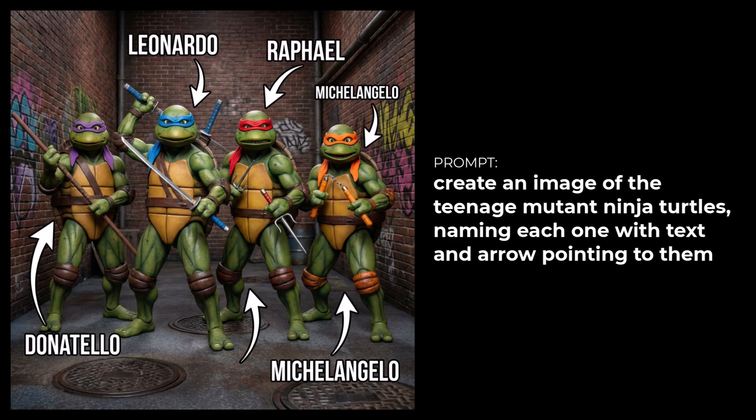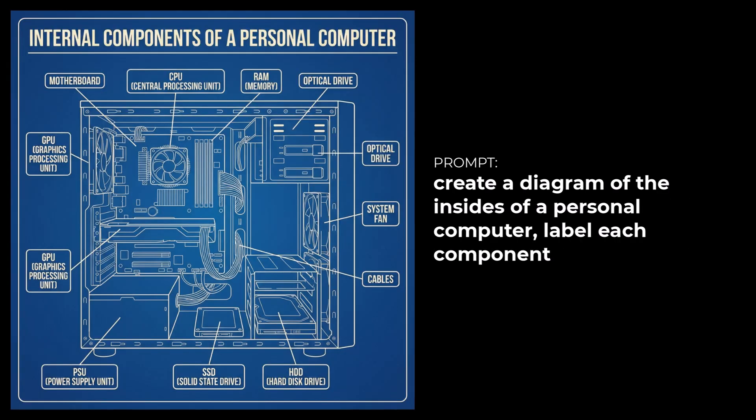I continued on and asked it to create an image of the Teenage Mutant Ninja Turtles, naming each one with text and an arrow pointing to it. It did that accurately, although it named Michelangelo twice and added a few rogue arrows — but if you can forgive that, it's actually pretty accurate.